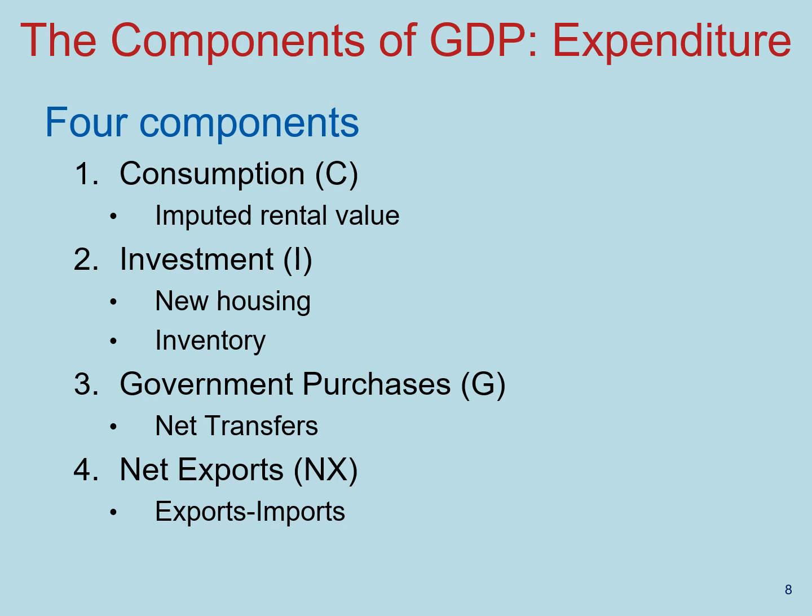Moving on to government purchases: net transfers do not count as government purchases. One example is Social Security payments, which get collected from payroll taxes from people currently working and are then transferred to Social Security recipients. The government did not make any goods or services in that process — they just shuffled money from one group of people to another. So that does not fit within the definition of GDP, and we will not include net transfers.